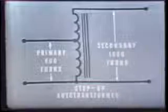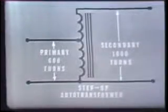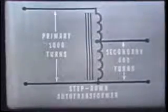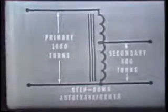A special type of transformer which uses only one winding for both the primary and the secondary coils is the auto transformer. An auto transformer can be used either as a step-up or as a step-down transformer. When used as a step-up transformer, all of the primary winding is part of the secondary winding. Here the winding has a total of 1,000 turns — 600 of these turns serve as the primary while the entire 1,000 turns serve as the secondary. When used as a step-down transformer, all of the secondary winding is part of the primary winding, with the entire 1,000 turns serving as the primary while only 600 serve as the secondary.